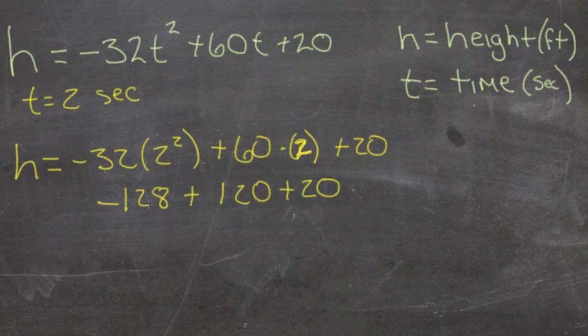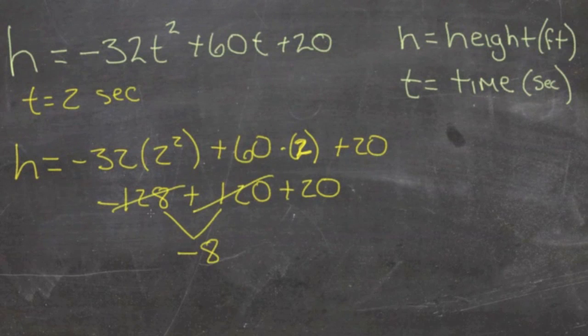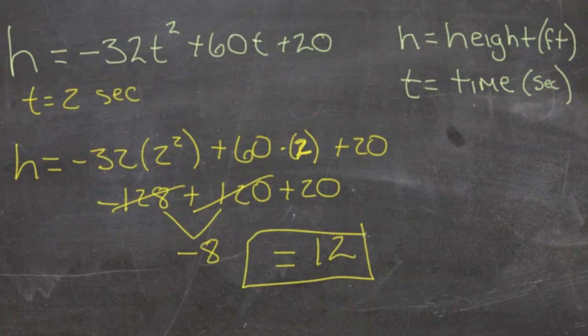Since this one's negative, it's going to be subtracted from here, that gives us negative 8, and then negative 8 plus 20 gives us 12. That means that the height of the object is 12 feet above the ground if it's fallen for 2 seconds.